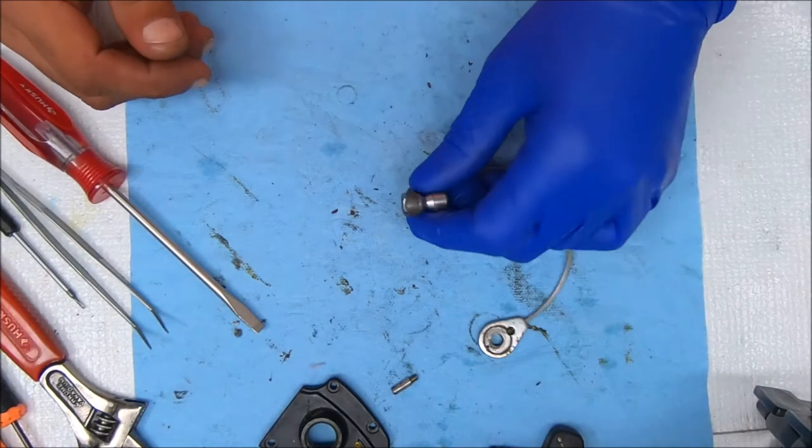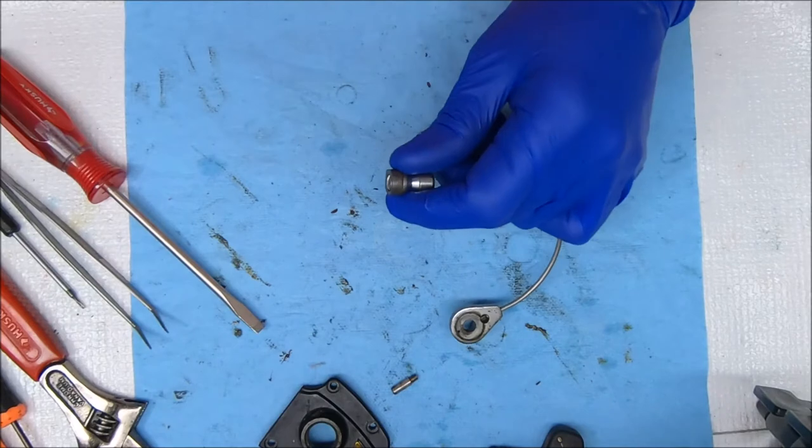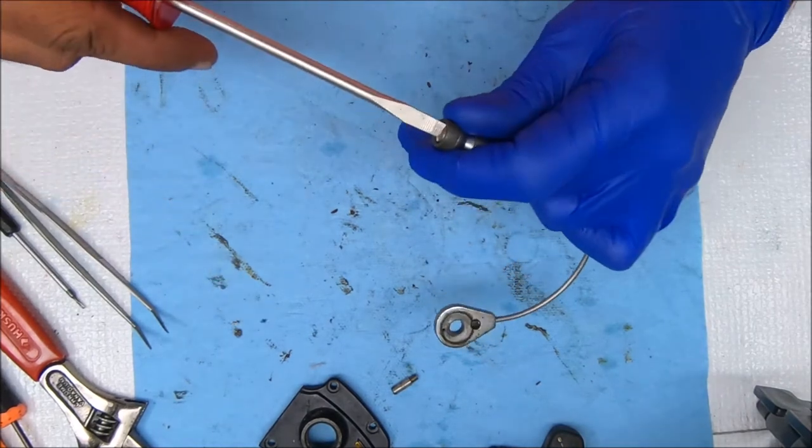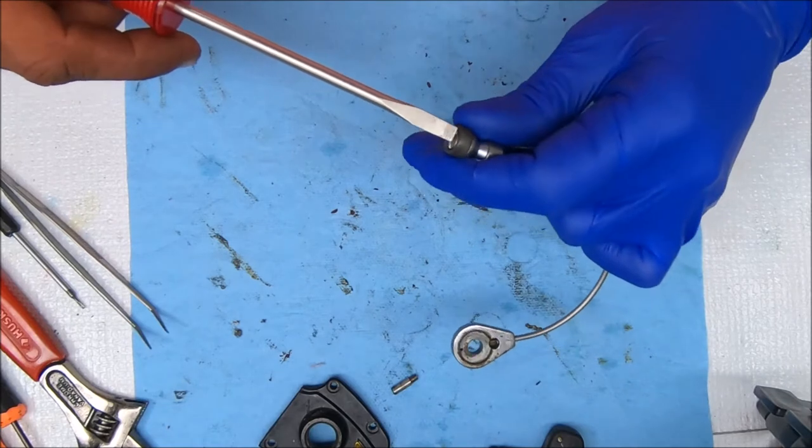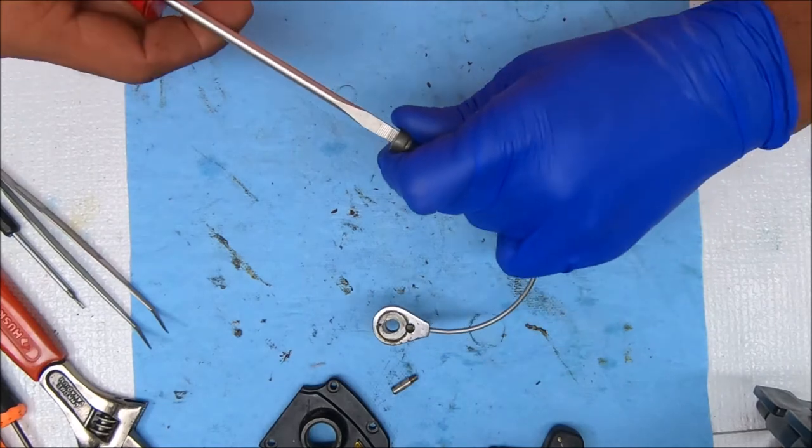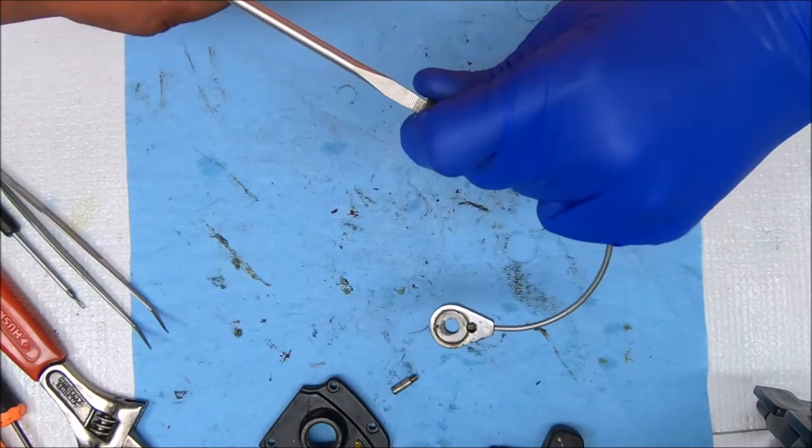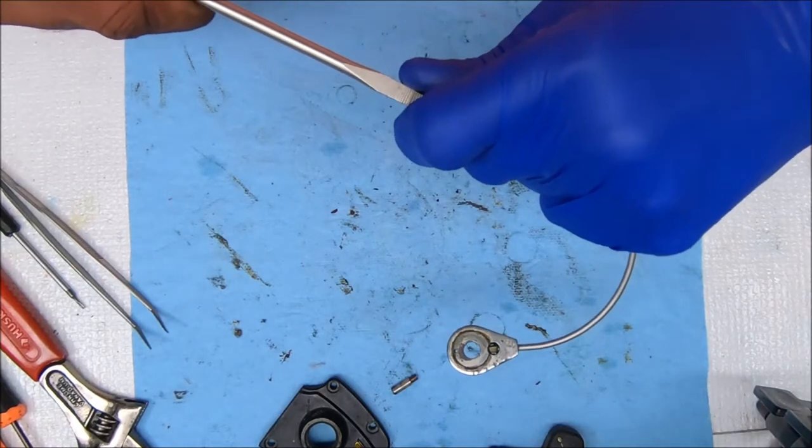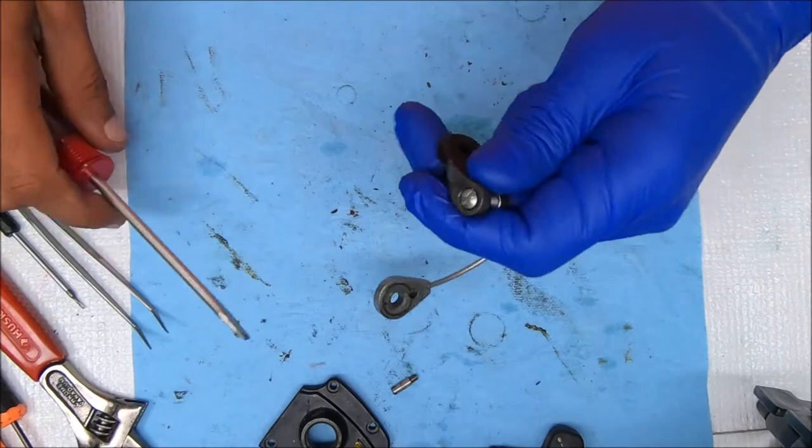Hey y'all, I was working on this Penn 5500 SS and couldn't get the bail-offs or this line roller undone. So I want to show you a simple trick to freeing this up if using oil or whatever doesn't work.